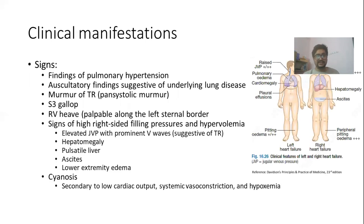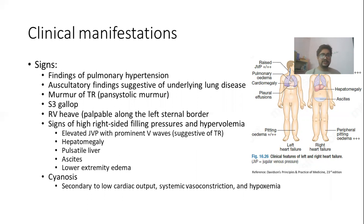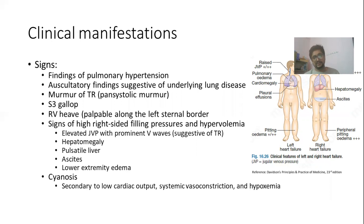On examination, we will find signs of pulmonary hypertension. Auscultatory findings related to the underlying lung disease can be present — for example, wheezing in a patient with COPD. The patient can have a murmur of tricuspid regurgitation, which is a pansystolic murmur, as well as a right-sided S3 gallop and a right ventricular heave palpable along the left sternal border. Signs of elevated right-sided filling pressures include elevated JVP with prominent V waves suggestive of tricuspid regurgitation, congestive hepatomegaly, pulsatile liver, ascites, and lower extremity edema. In later stages, when there is low cardiac output with peripheral vasoconstriction or hypoxia, cyanosis can also be present.